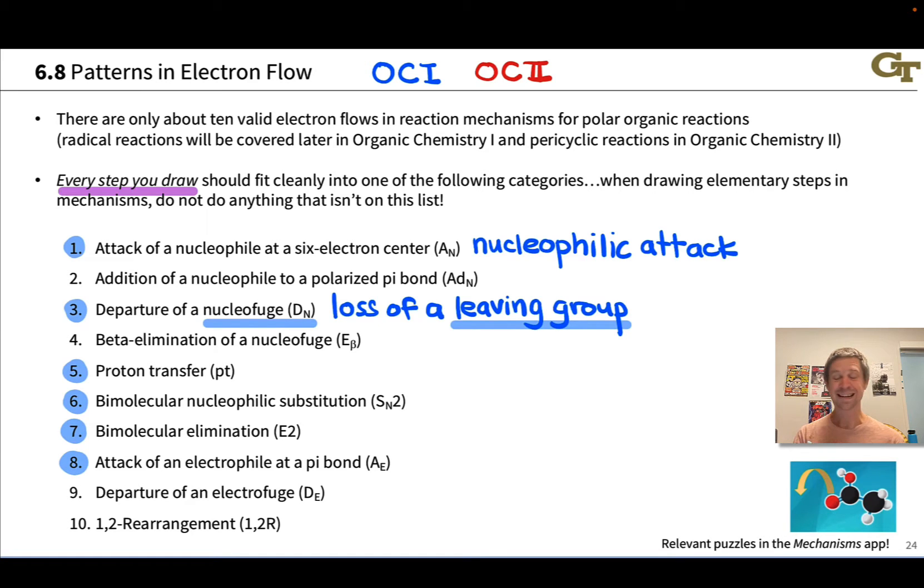And then we'll see attack of an electrophile at a pi bond, particularly when we start talking about alkenes and alkynes later in the course. These are nucleophilic carbon groups containing double and triple bonds that can react with electrophiles, and this A sub E step figures prominently into those mechanisms. We will not commonly see the reverse of this, which is the departure of what we might call an electrophuge, a group that breaks off without taking a pair of electrons with it. This is not common in introductory organic chemistry. Typically when this happens it will be via proton transfer. And then finally 1-2 rearrangement is very typical of carbocations, and we'll study reactions involving carbocation intermediates a great deal in organic chemistry 1. We'll see how these 1-2 or 1-2 rearrangement steps figure prominently into the reactivity of quite a few carbocations.